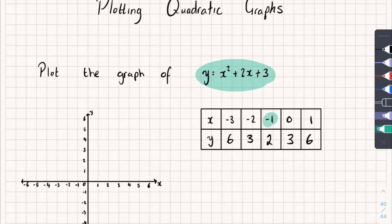And you might notice, about the point x equals negative 1, the graph is kind of symmetrical because it goes 3 then 3, 6 then 6. And the reason that is is to do with the shape of the quadratic graph.